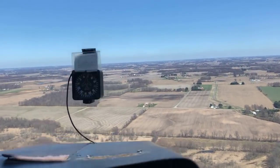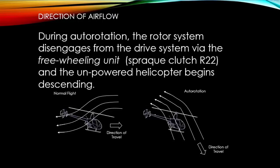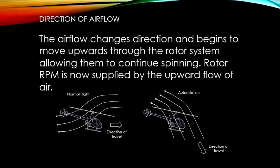As Gary is getting set up for this auto rotation, we want to explain the direction of airflow. During powered flight, air is drawn from above and accelerated down through the rotor system — the engine is generating the rotor RPMs. During auto-rotative flight, the rotor system disengages from the drive system via the freewheeling unit and the unpowered ship begins to descend. The airflow changes direction and begins to move upward through the rotor system, causing it to spin — rotor RPM is now supplied by the upward flow of air.